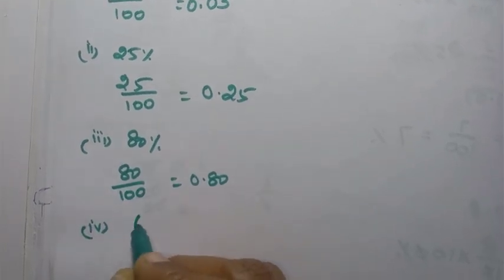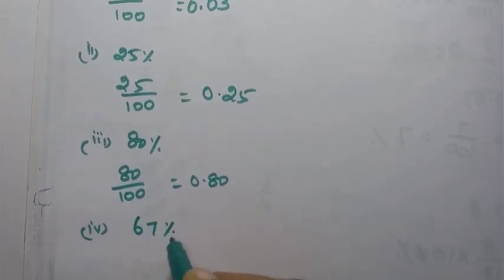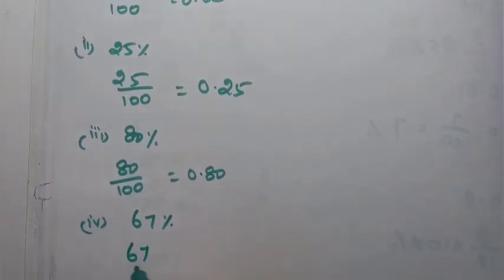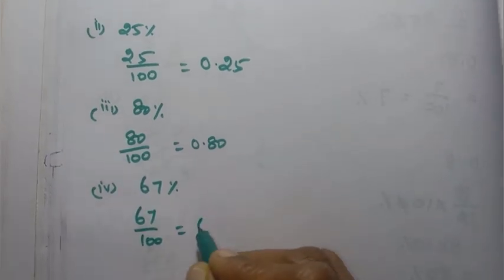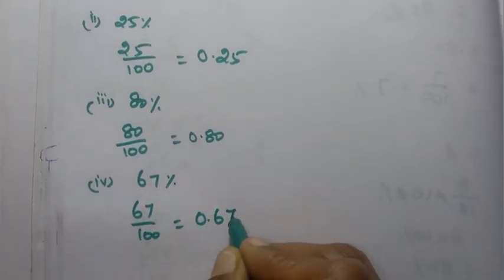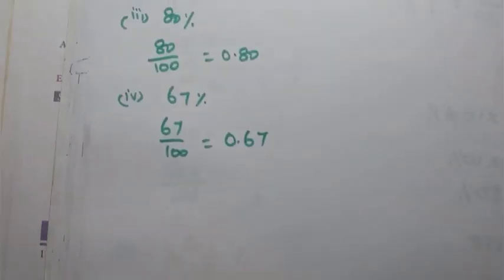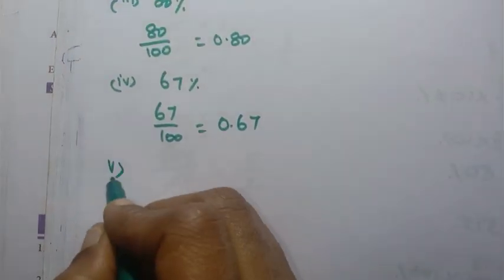Then 4th one: 67 percentage. 67 by 100 equal to. 0.67 decimal.